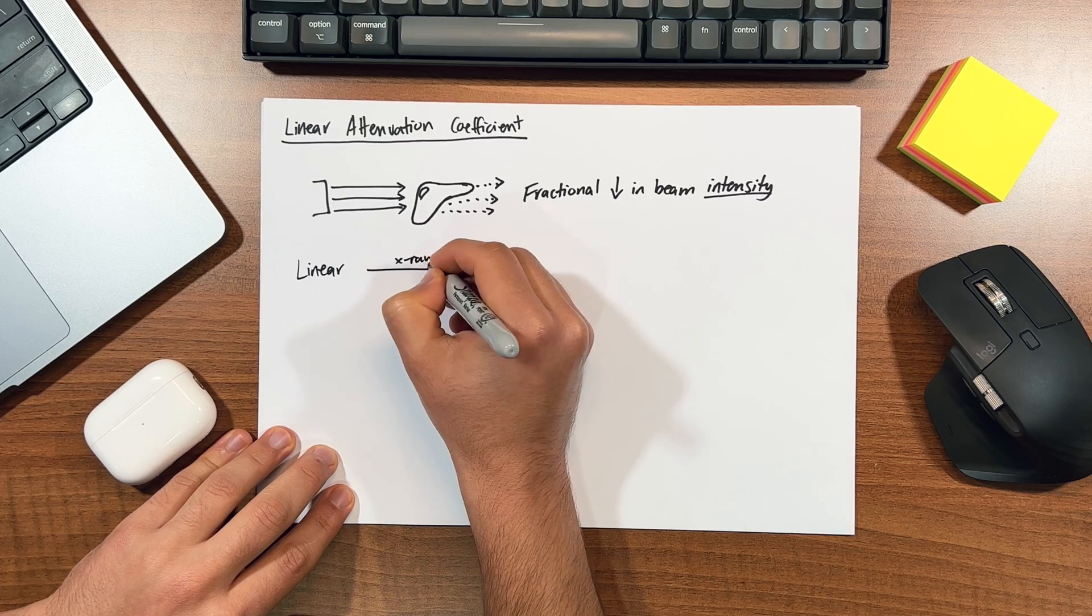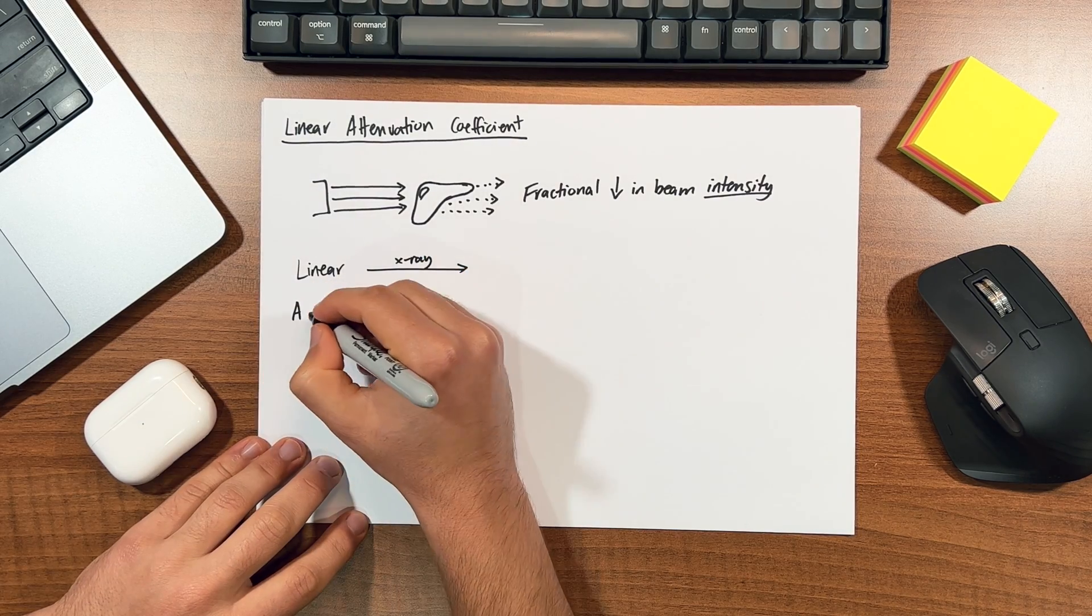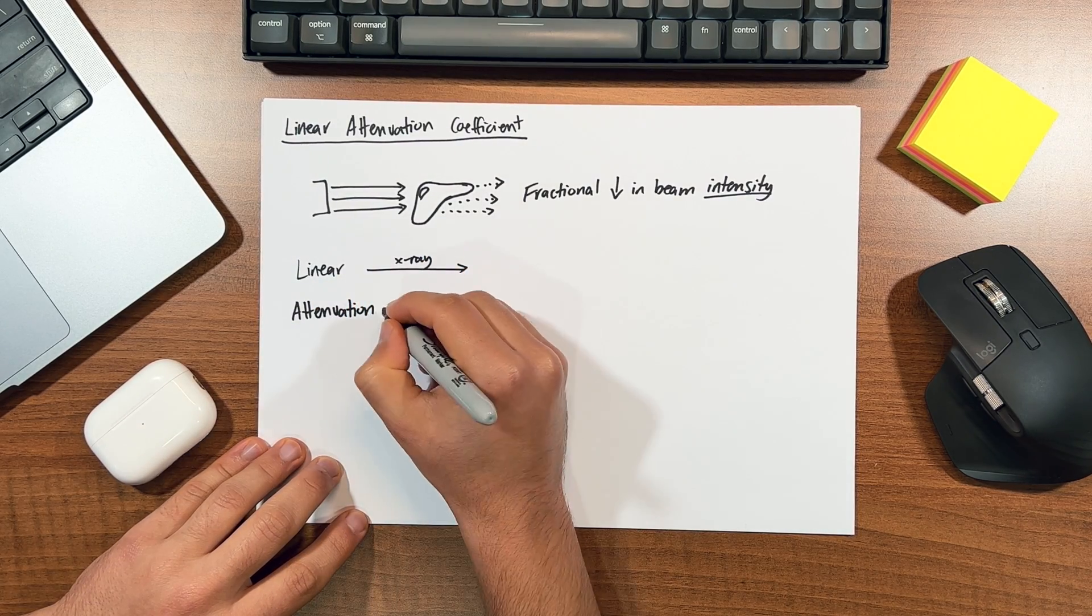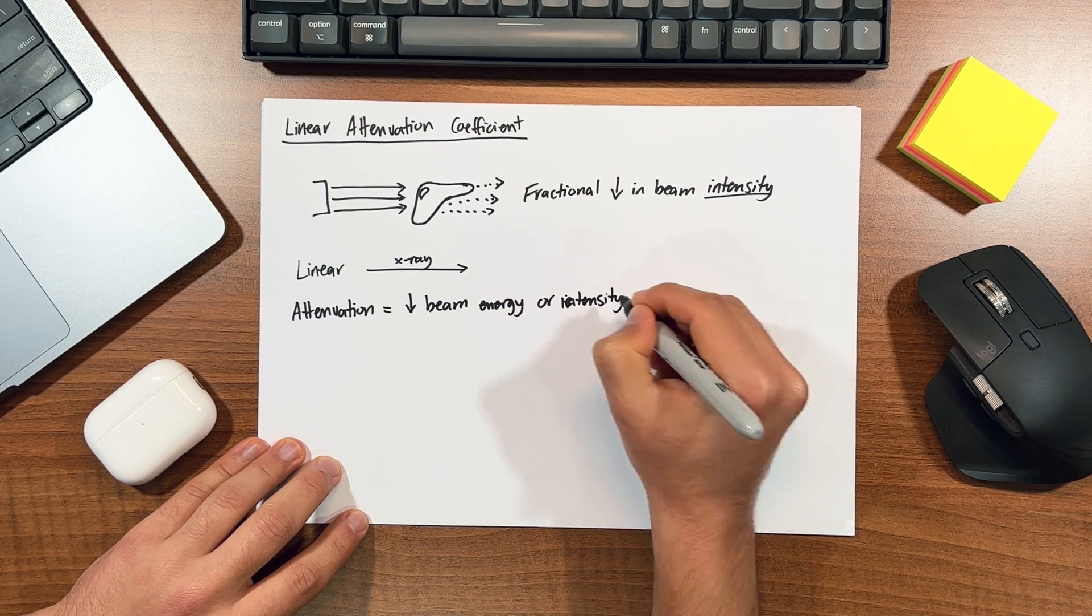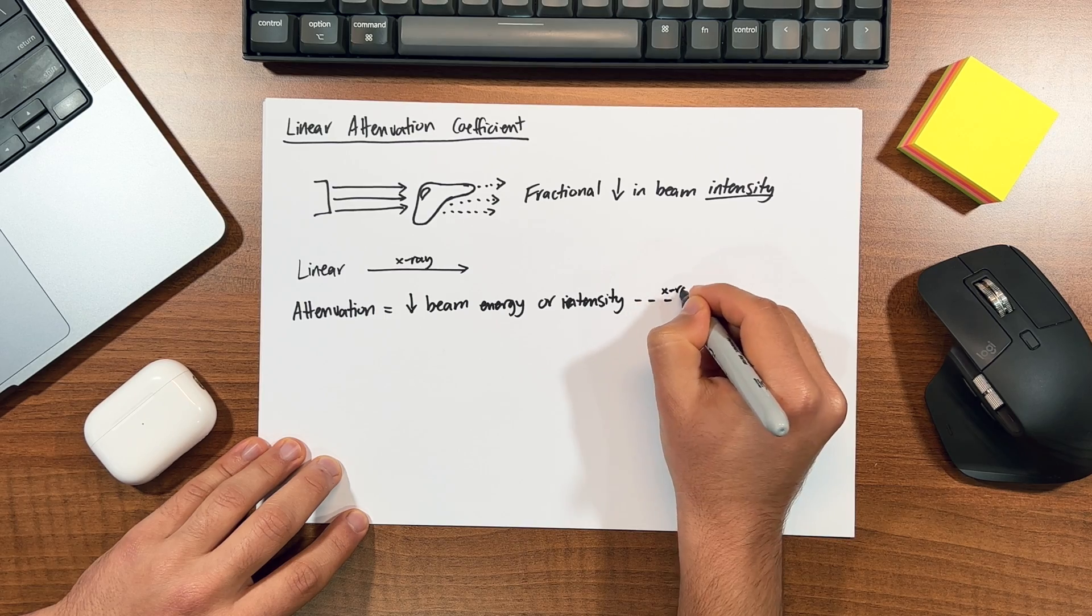Okay, first we have linear. No prizes for knowing this one, just referring to an x-ray that's going in a straight path. Next is attenuation, which you can think of as reducing the beam's energy, force, or effect, or in terms of medical imaging it's just referring to how much an x-ray beam reduces its intensity as it attempts to go through matter.